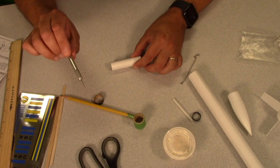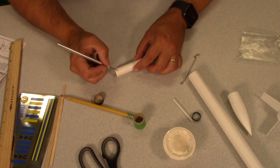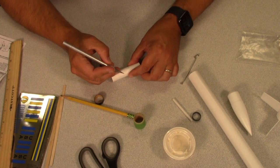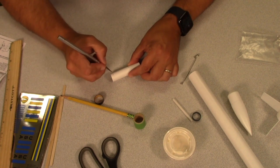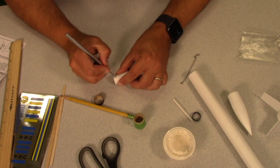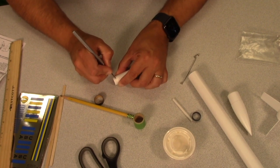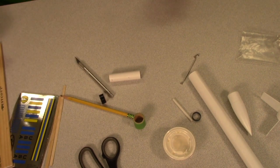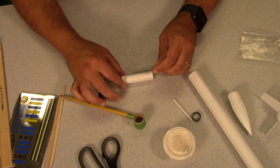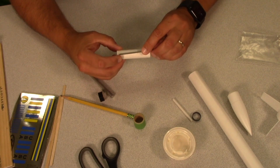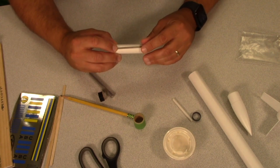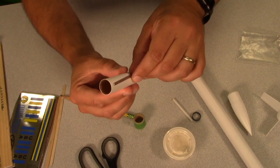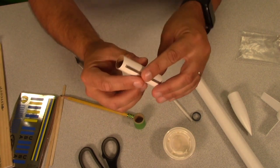Now we're going to take our X-Acto knife. Be very careful, kids, with this. And we're going to poke a small little slit at the first mark at the top. Just a little slit. And now we're going to take the metal piece that we have here. It has a little tab and we're going to push it down into the first mark, the slot that we just opened up. See, it kind of sticks out inside there.